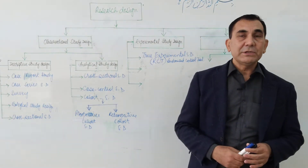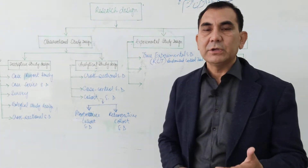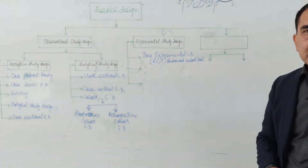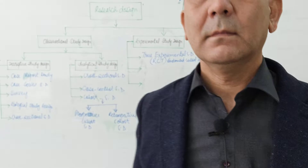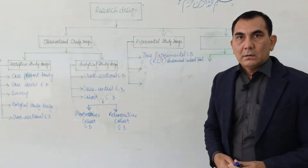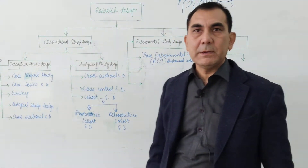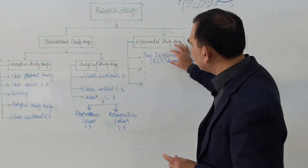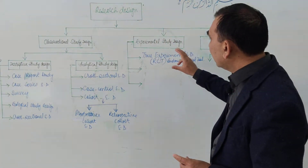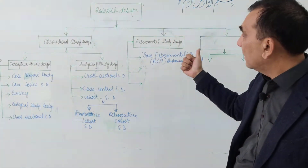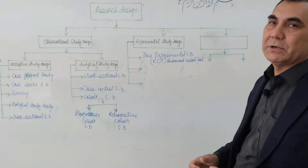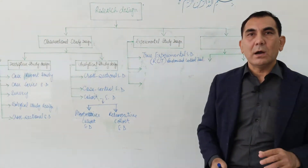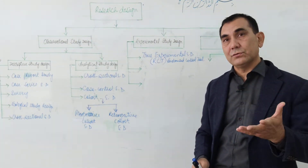The experimental study design is further divided into three types. The first type is called the true experimental study design, which is also called the RCT or randomized control trial.